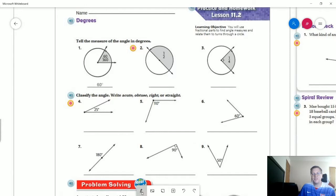So number two, they want us to give the measurement in degrees for a straight angle. That would be 180 degrees.